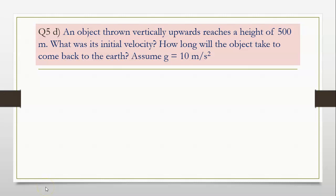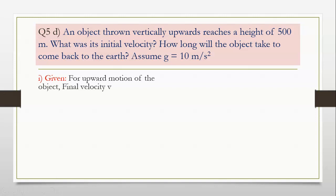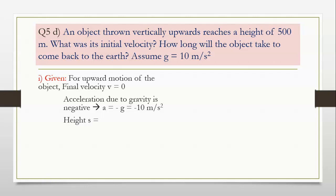So students, what do we do first? We first find out the given. For upward motion of the object, final velocity v is always 0. Acceleration due to gravity is negative. Therefore, a is equal to minus g is equal to minus 10 meter per second square. Height s is equal to 500 meter.